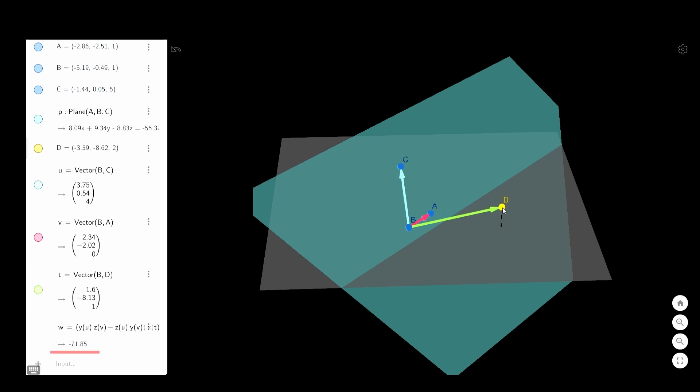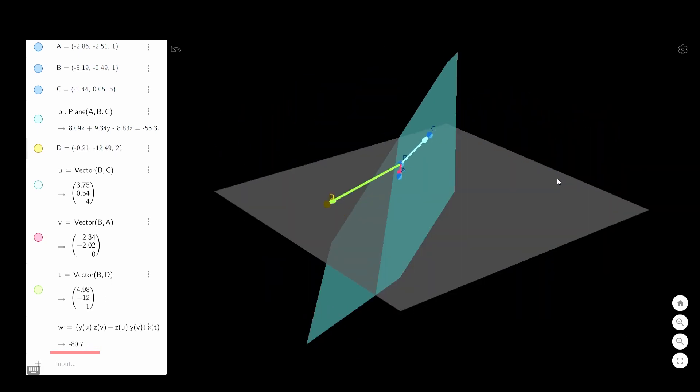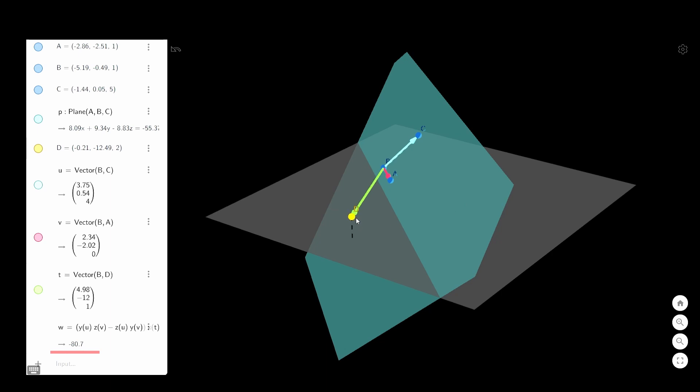the fourth coordinate of the hyper cross product is gonna tell us on which side of the plane the point is. On one side of the plane it's gonna be positive and on the other side it's gonna be negative.